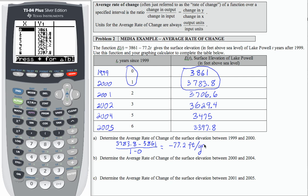For 2000 to 2004, we're going to be looking at here to here. So that's 3,475 minus 3,783.8 divided by 5 minus 1. That's going to give us negative 308.8 over 4, which is negative 77.2 feet per year.